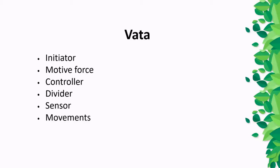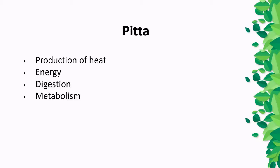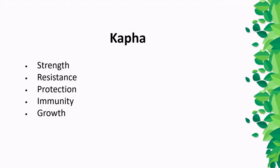Pitta performs functions such as production of heat, energy, digestion, and metabolism. Kapha performs functions like giving strength, resistance, protection, immunity, and growth. So these are the specific functional roles of the three doshas in the body.